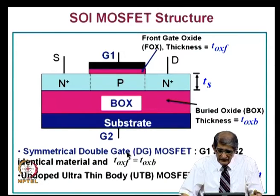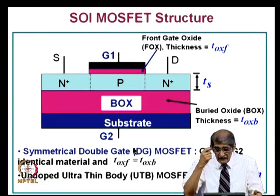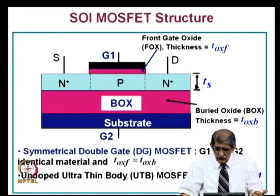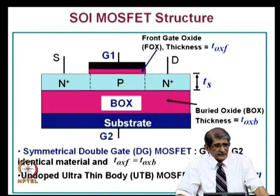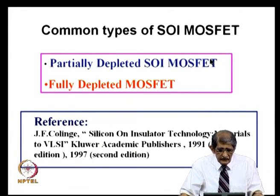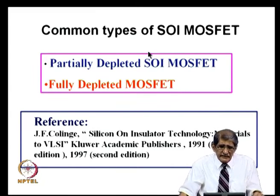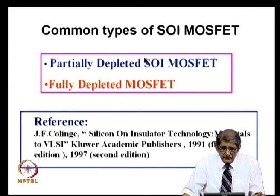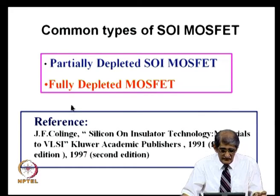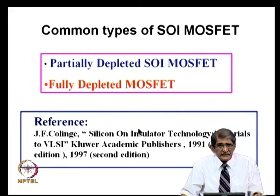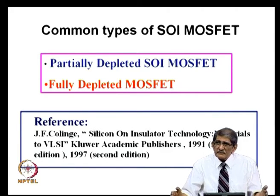Undoped ultra-thin body MOSFETs — UTB MOSFETs — will have T_silicon (the thickness of the silicon layer) of 1 to 10 nanometers; that is the ultimate target. You can basically have two types of SOI MOSFETs: one is partially depleted SOI MOSFET and the other is fully depleted SOI MOSFET. A lot of reference material on SOI MOSFETs is available in the book authored by Colinge, 'Silicon on Insulator Technology: Materials to VLSI,' Kluwer publication, first edition 1991, second edition 1997.